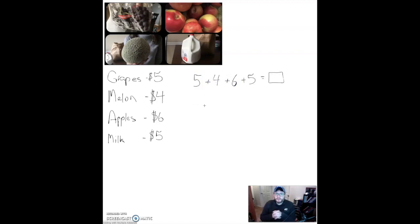And this is the number sentence I came up with: five plus four plus six plus five. Five dollars for the grapes, four dollars for the melons, six dollars for the apples, and five dollars for the milk.